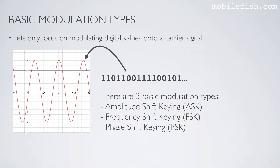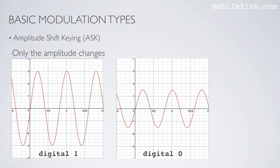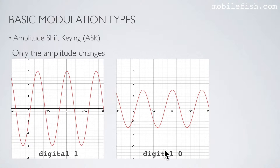Now let's focus on modulating digital values onto a carrier signal. In this example we have a digital message which we want to encode on a carrier signal. There are three basic modulation types: amplitude shift keying, frequency shift keying, and phase shift keying. When we use amplitude shift keying, only the amplitude changes. The amplitude is here 3 and here the amplitude is 1.5. If the amplitude is 3 it represents a digital 1, and when the amplitude is 1.5 it is a digital 0.